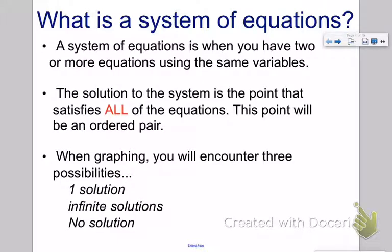A system of equations is when you have two or more equations using the same variables. The solution to the system is the point that satisfies all of the equations. This point will be an ordered pair.